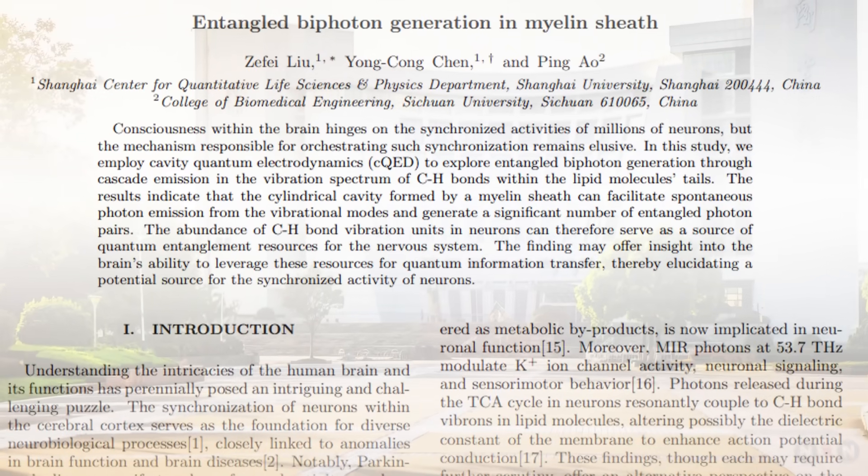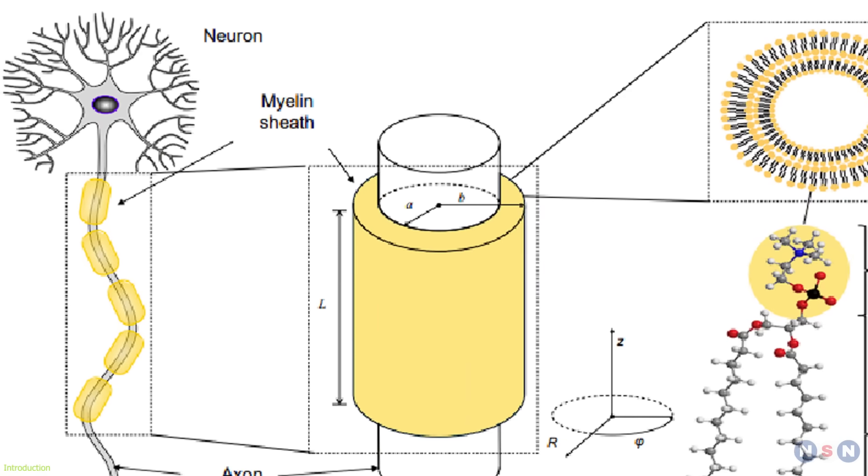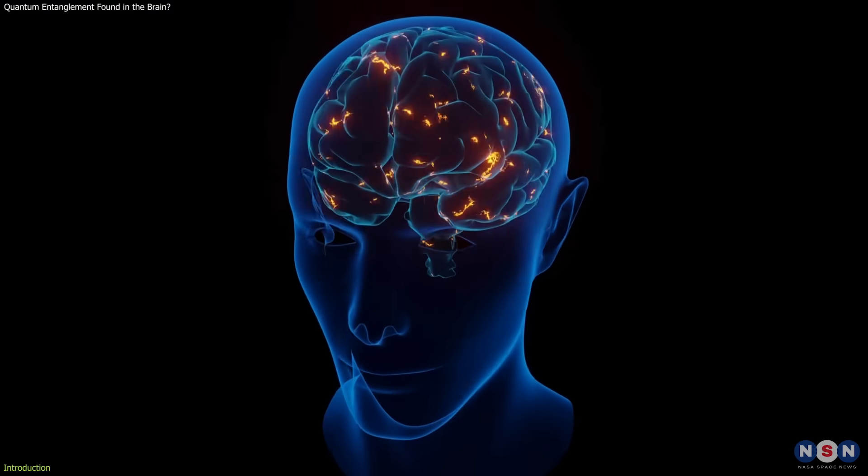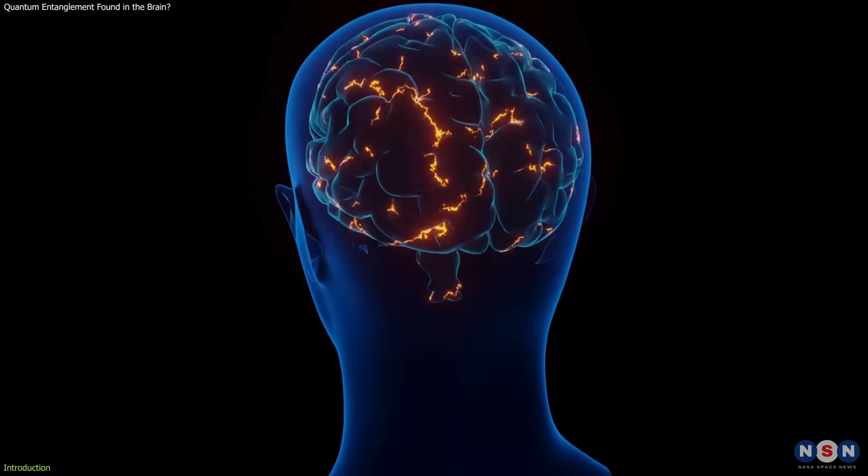A groundbreaking study from Shanghai University suggests that myelin, the insulating layer around neurons, could enable entangled photons in the brain, potentially unlocking the mystery behind how consciousness synchronizes brain activity.